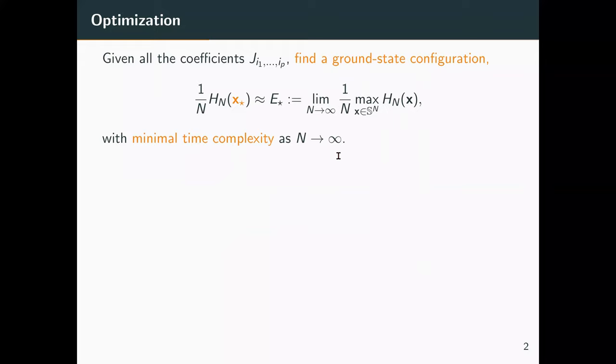And the problem I will talk about is an optimization problem. What we want to do is given the function, find a point where the function attains roughly the maximal value or maximal energy. So first, let me comment that in these models, if you normalize the maximum by N, then it has a limit, which I denote by E_star. This is called the ground state energy. And such configurations or points are called ground state configuration, x_star in the equation. And to be precise, what you get as an input are the coefficients J, which define the random function.